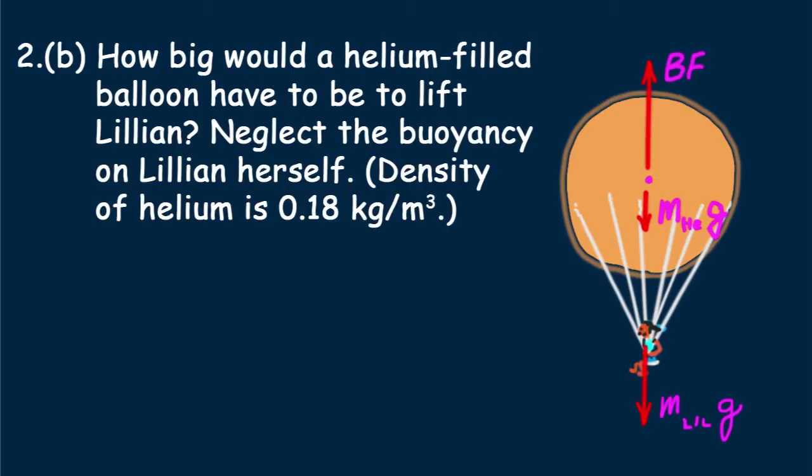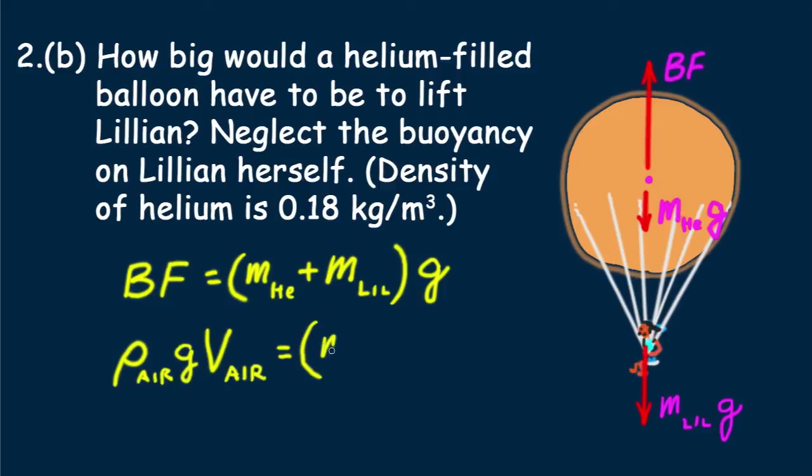Let's look at what's going on here. From the vector diagram, we see that the buoyant force equals the weight of the helium plus the weight of Lillian when there is no net force up or down. And buoyant force, after all, is the weight of air displaced, which is the weight density of air times its volume.